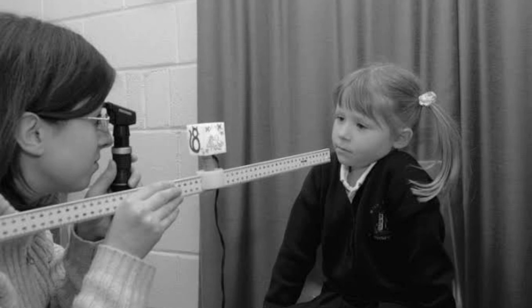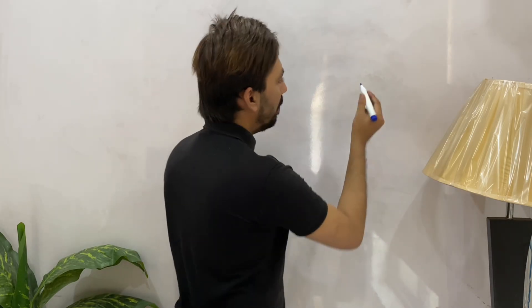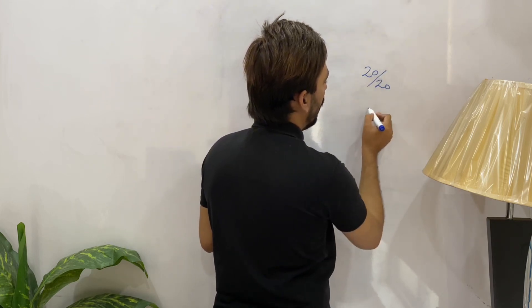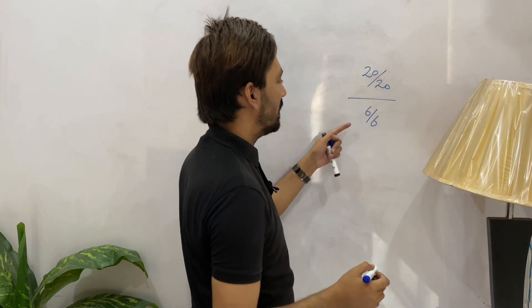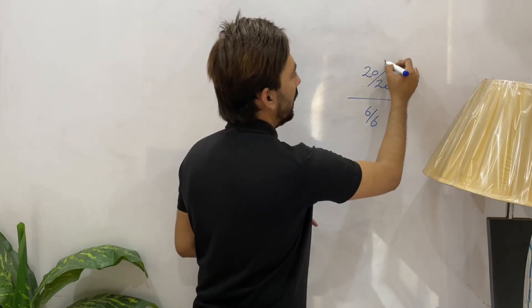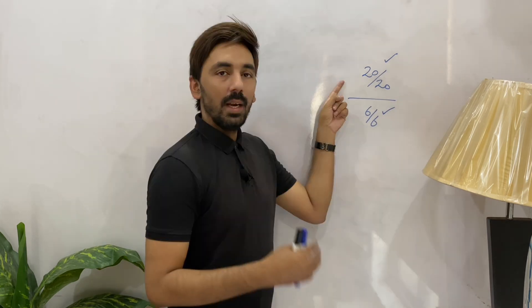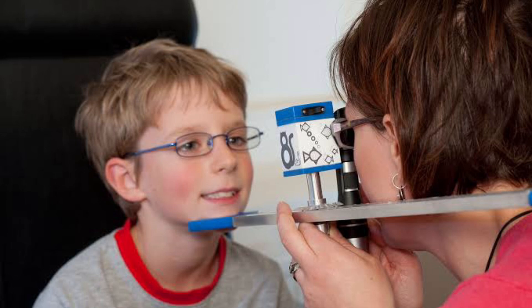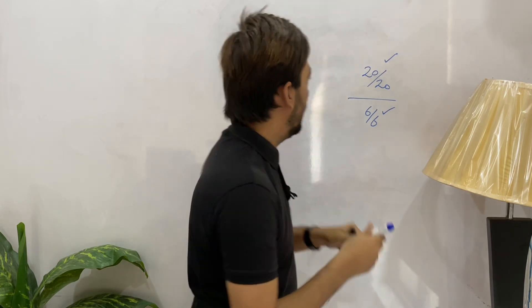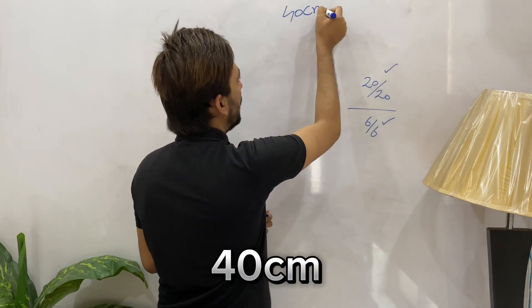Before that, remember that there should be a card placed on the retinoscope head. That card should have optotypes of 6/6 or 20/20 size — 20/20 in feet and 6/6 in meters — the same size as the last line of the Snellen chart. The distance between the patient's pupil and the card on the retinoscope head should be 40 centimeters.